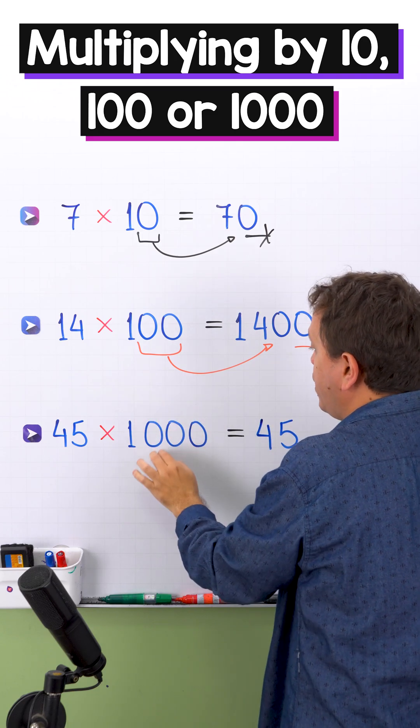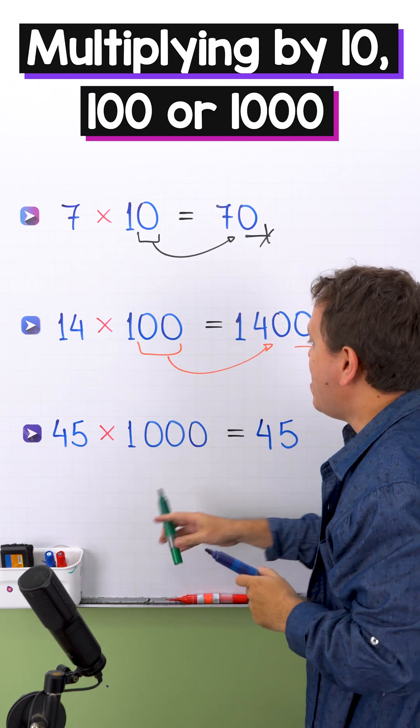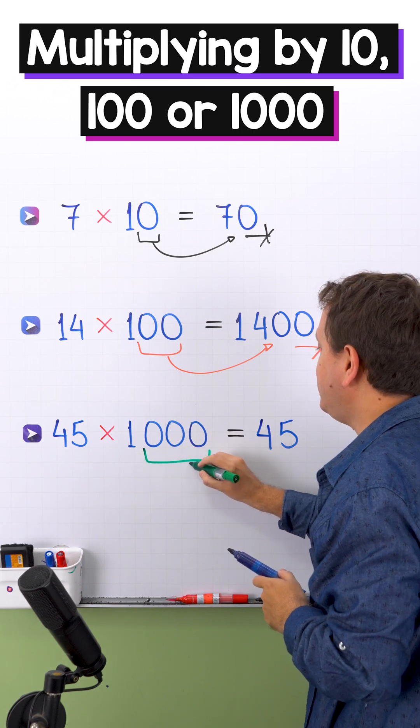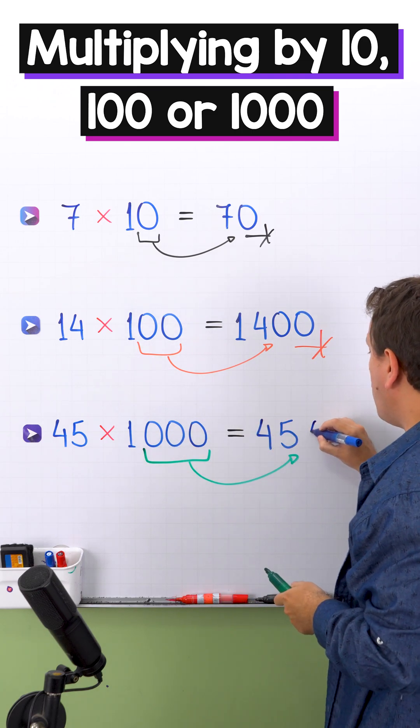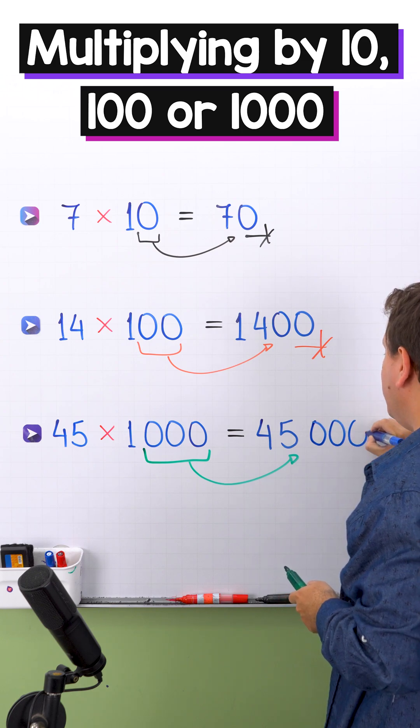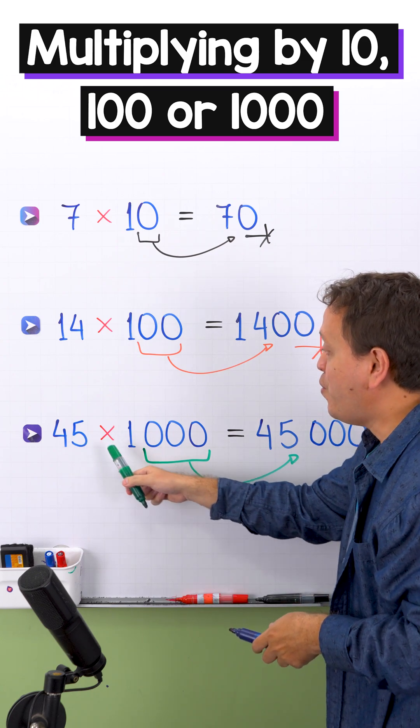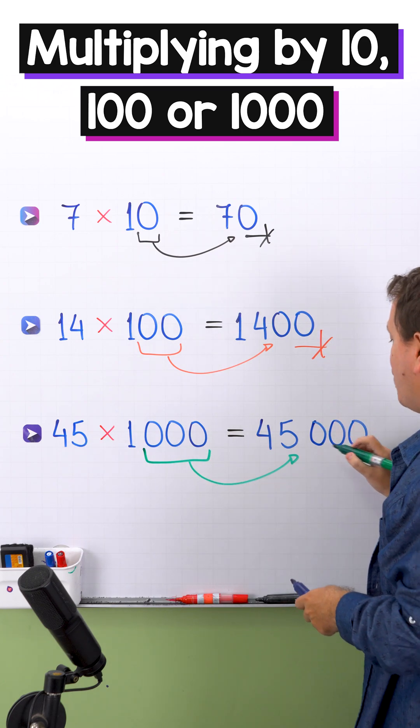Now, we show the 3 0s that we hid before, and finally, we just need to move these 3 0s to the right. 1, 2 and 3 0s, 1, 2 and 3 0s. Therefore, 45 times 1,000 gives us 45,000.